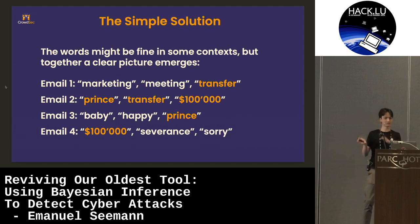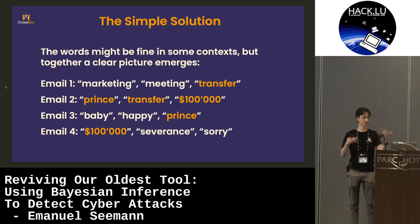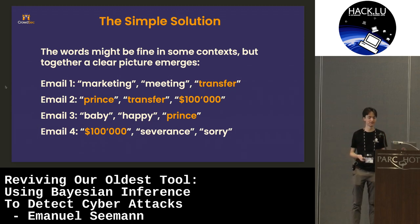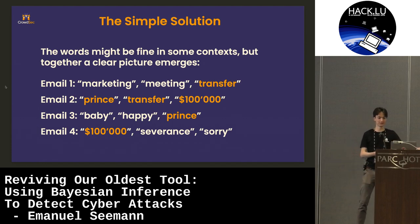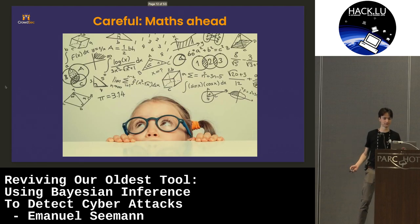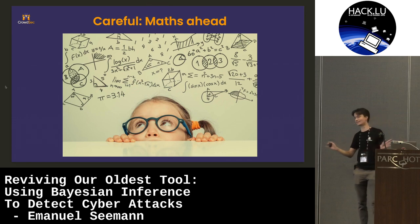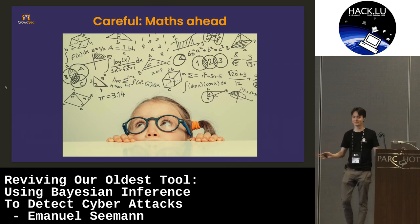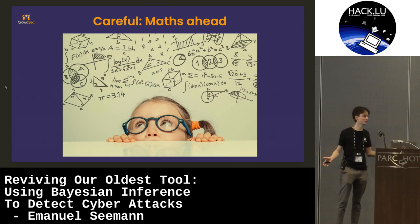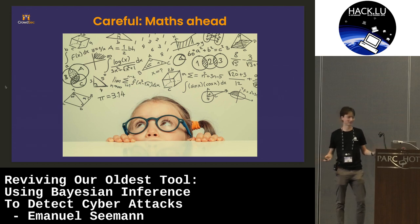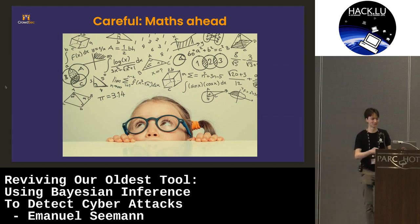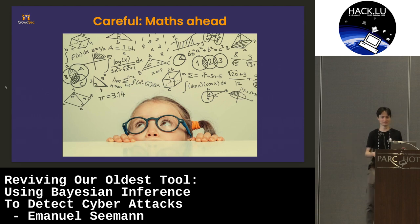So Bayesian inference, in some sense, translates this intuition that we have about these words into a mathematical process that can then be calculated by the computer. Careful, there's some maths ahead, but it's not complicated — you all can do multiplication. There's just going to be some terms that we use to confuse people who don't use maths all the time, so we just introduce them here.